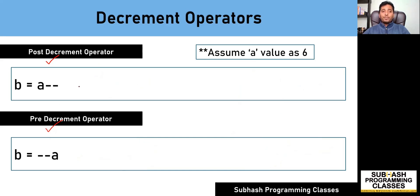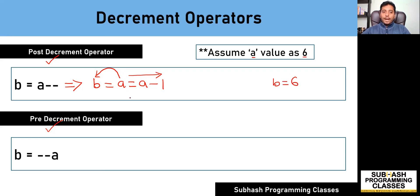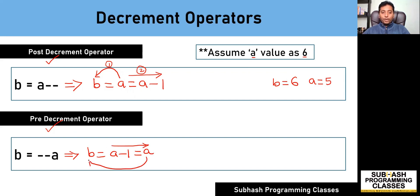Similarly, when you get the expression b = a--, this must be considered as: b = a; a = a - 1. It means first store the value of a into b, and then decrement the value of a. Assuming the initial value of a is 6, b becomes 6 and after decrementing, a becomes 5. Whereas when you say b = --a, this is considered as: a = a - 1; b = a, meaning first decrement a and then store the decremented value into b. So with a starting at 6, a becomes 5 and b also becomes 5.